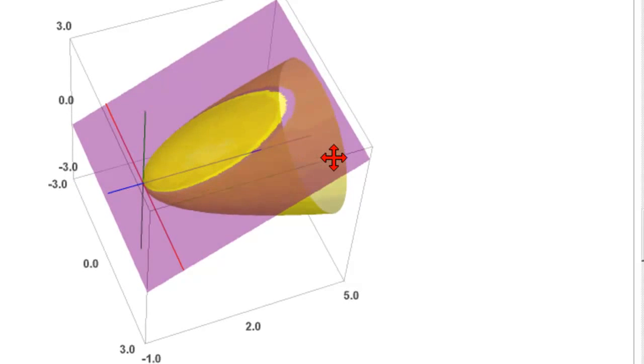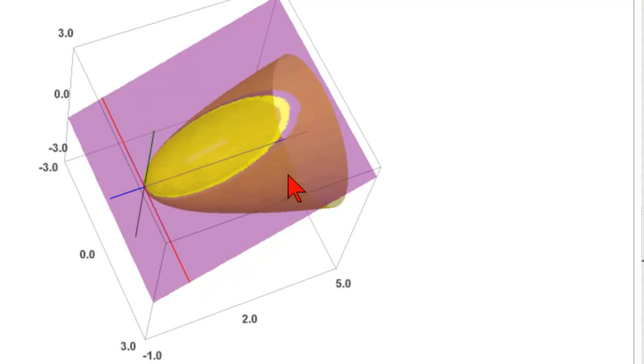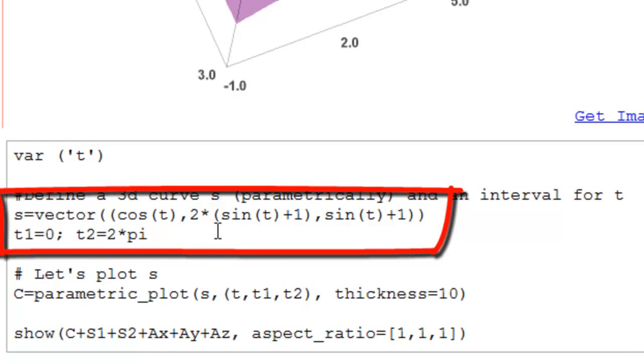There is our distorted circle. And now what we want to see is if we put in our parametric equation, whether we get this circle right here, this curve right here. So here's our parametric curve. So here's cosine of t for x, here's sine of t plus 1 for z, and then 2 times that for y. And we went from 0 to 2 pi.